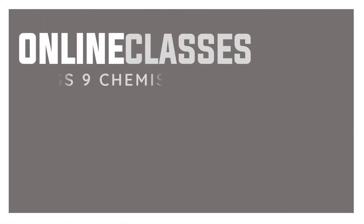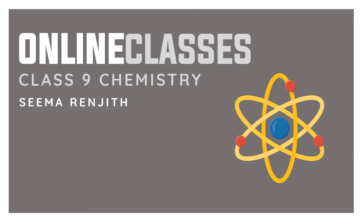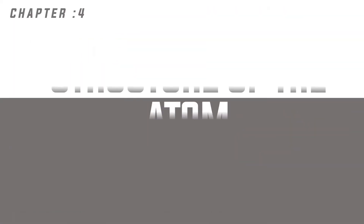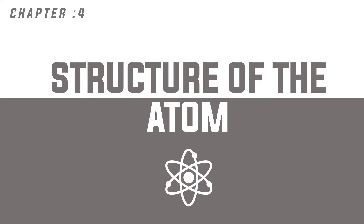Hello children, welcome to 9th chemistry online classes. Chapter 4: Structure of the Atom. An atom consists of two charged particles — positively charged protons and negatively charged electrons. We studied Thomson's model of an atom.